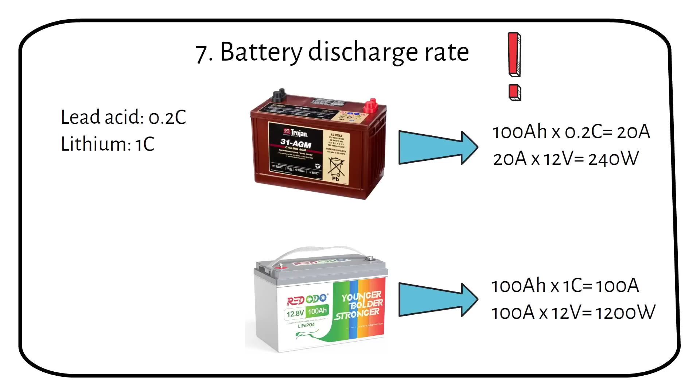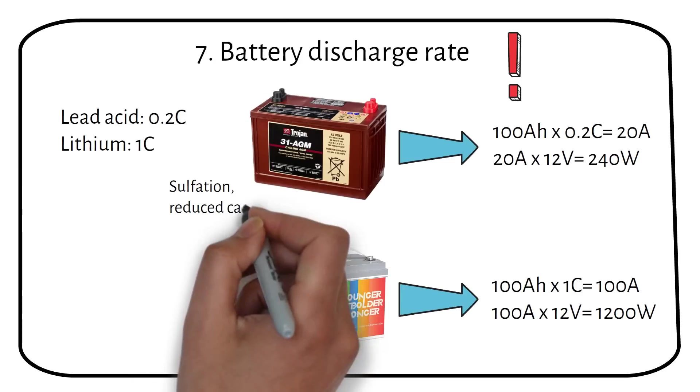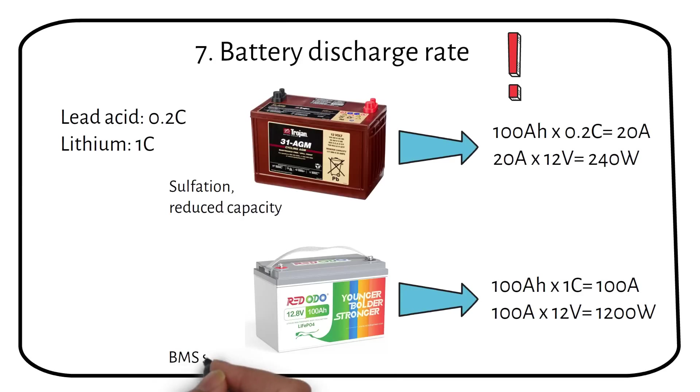Exceeding the discharge rate for lead-acid batteries can cause sulfation and reduced capacity, while for lithium batteries, the battery management system or BMS will shut down to prevent damage. Always follow the manufacturer's guidelines on charge and discharge rates to ensure your batteries perform efficiently and last longer.